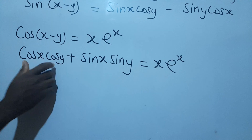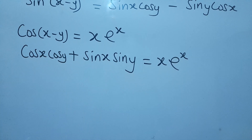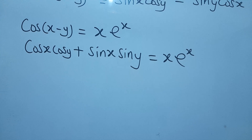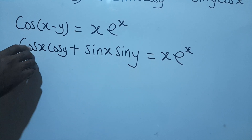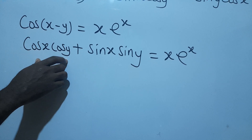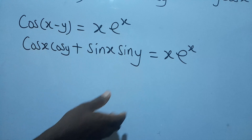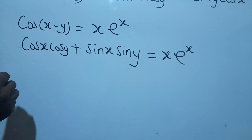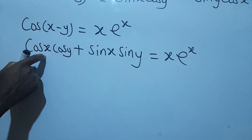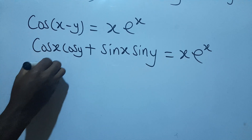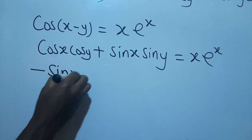Now I need to differentiate this using implicit differentiation and the product rule. Since the terms are multiplying, we use the product rule: keep cos x and differentiate cos y, plus keep cos y and differentiate cos x. So keeping cos x and differentiating cos x gives negative sin x.